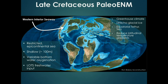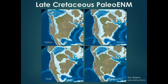I work in the Western Interior, a restricted epicontinental sea that was probably not more than 100 meters at its deepest. Over the 35 million years the seaway was open to both the Arctic Sea and the Gulf of Mexico, it had variable bottom water oxygenation and a lot of freshwater input from rains hitting the proto-Rocky Mountains. The seaway connected from the Arctic to the Gulf of Mexico around 100 million years ago, was going strong by 85 million years, and by about 65 million years had started to recede until it completely drained.